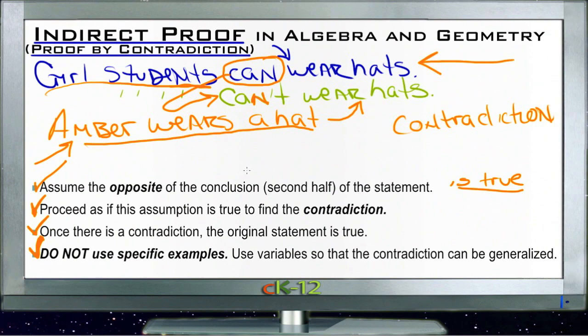We don't want something specific because we want to be able to apply our statement to a general situation, to be able to say that it always is true. So let's take a look at how this works with our example questions. We're going to apply it to some actual mathematics problems and see how this indirect proof works with actual numbers and letters.